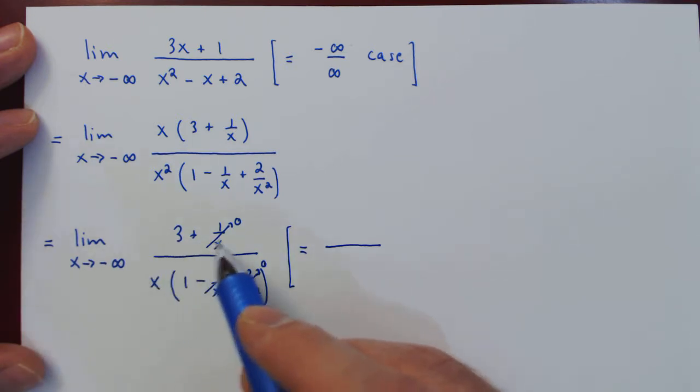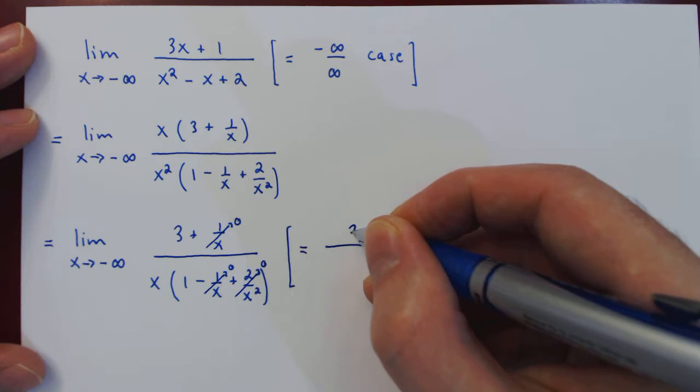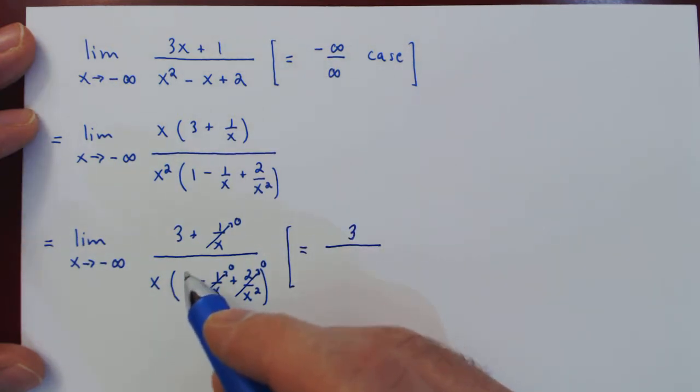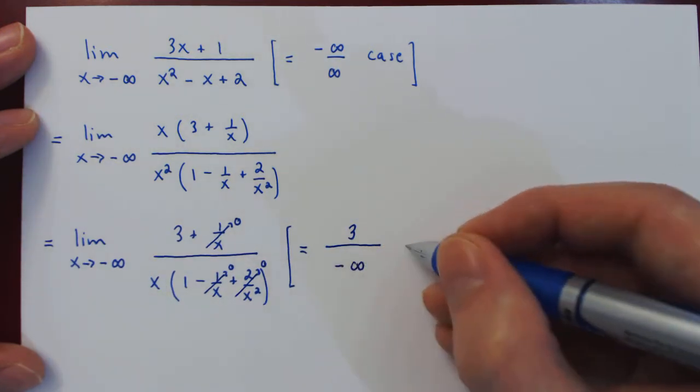As x goes to negative infinity, the numerator is approaching 3. On the denominator, this is approaching 1 times negative infinity, going towards negative infinity.